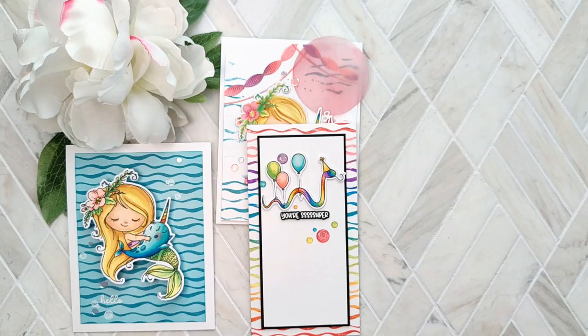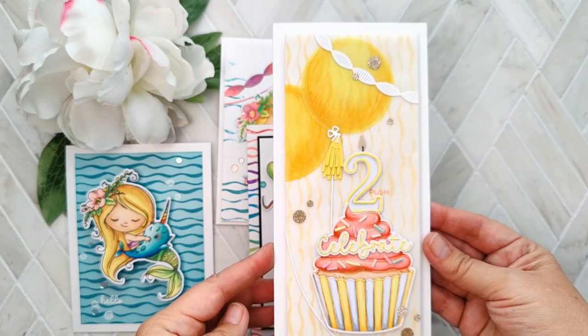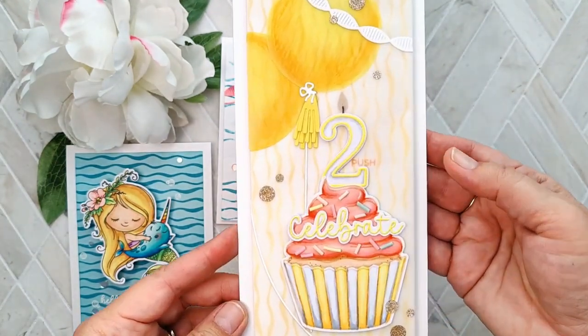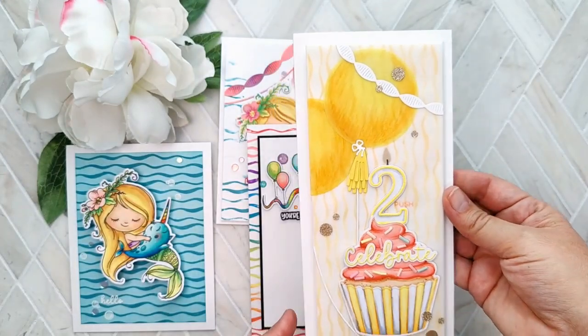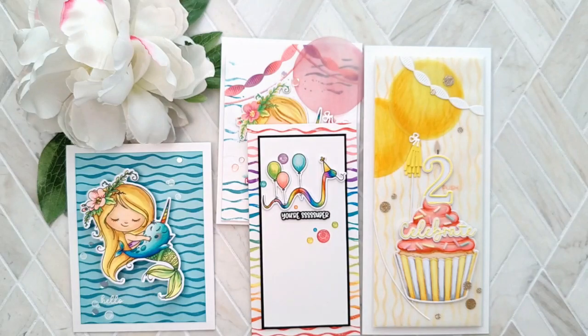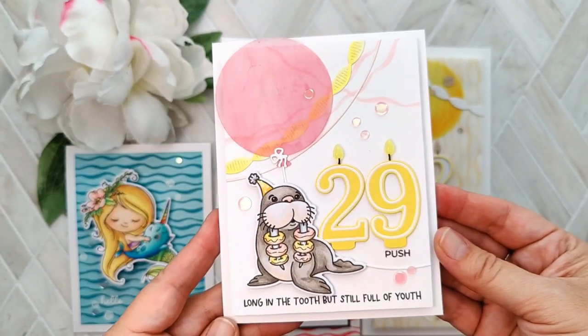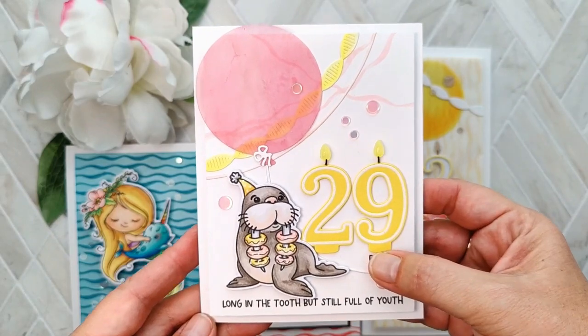And then this one is our slimline. Remember I said that you wouldn't be able to tell where that line is? Can you see it? I hid it underneath the cupcake. I did put some vellum over that panel. And then our last one, where I did some stamp surgery, I added some 3D banners to go along with it and made another little light-up card there.